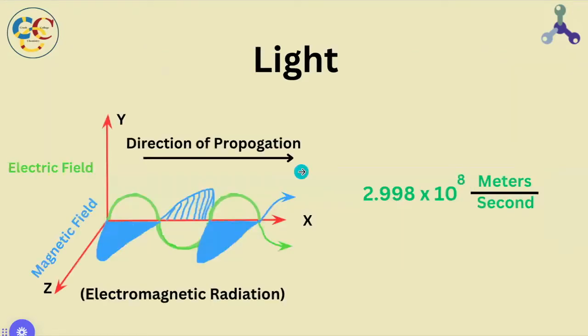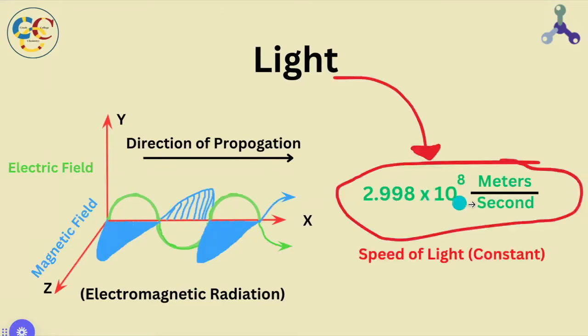Electromagnetic radiation, or more simply light, travels at a constant rate of 2.998 times 10 to the 8 meters per second. In other words, this is the speed of light, and it's always the same in a vacuum.